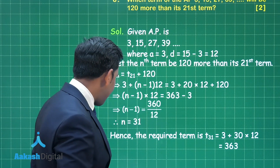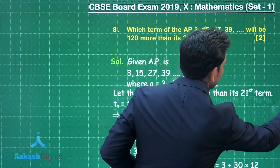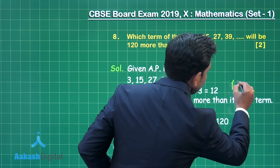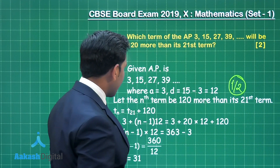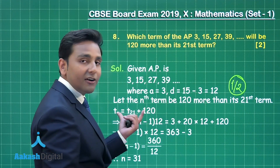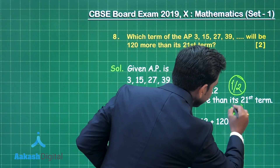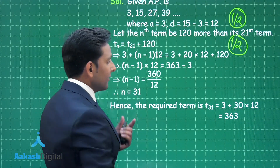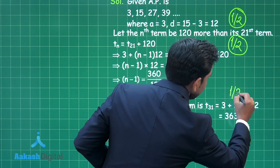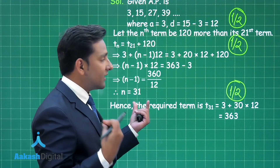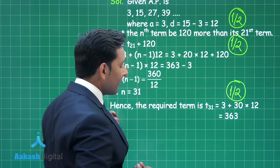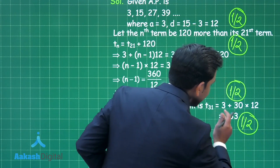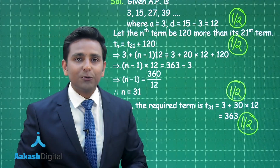Now let us look at the marking scheme. When you write the first term and common difference, you score half a mark. This important relation gives you another half mark. When you obtain the value of n, you score another half mark, and the rest half mark is based on the final answer — that means 363.